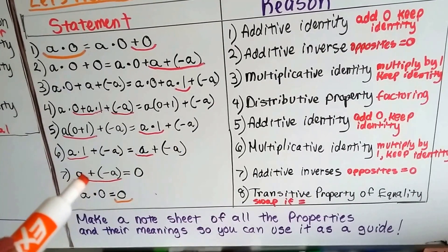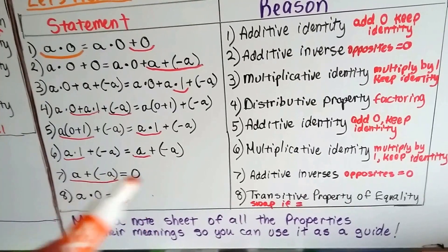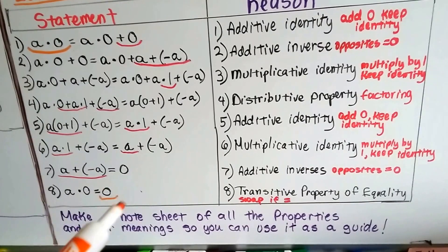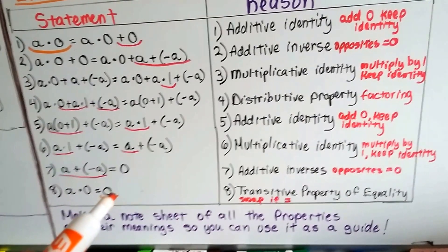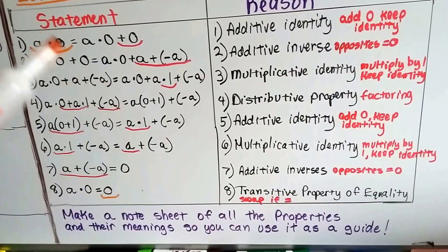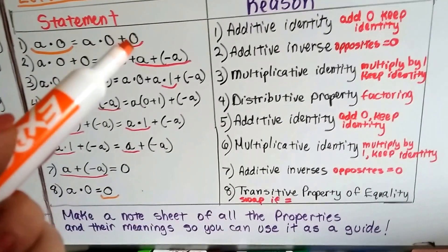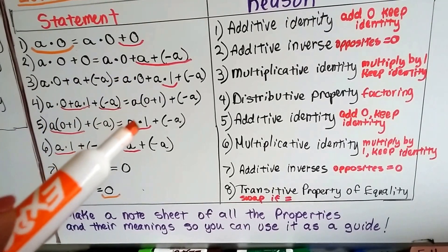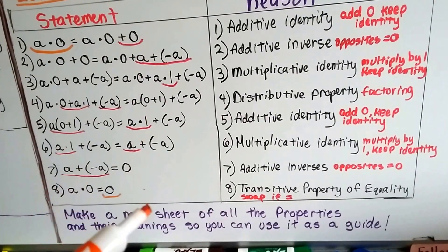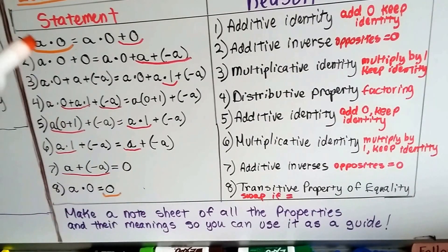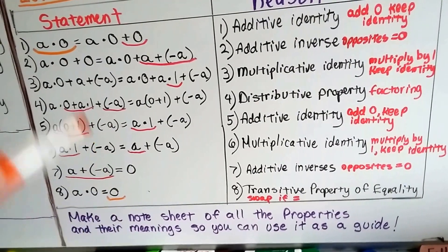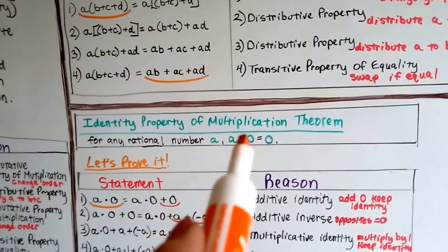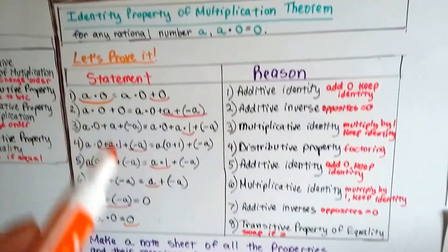Moving down, a + (−a) equals zero by the additive inverses — opposites equal zero. Then the transitive property of equality says: since a × 0 was equal to each expression in the chain, and the last expression equals zero, a × 0 must equal zero. That's what we were trying to prove: a times 0 equals 0.